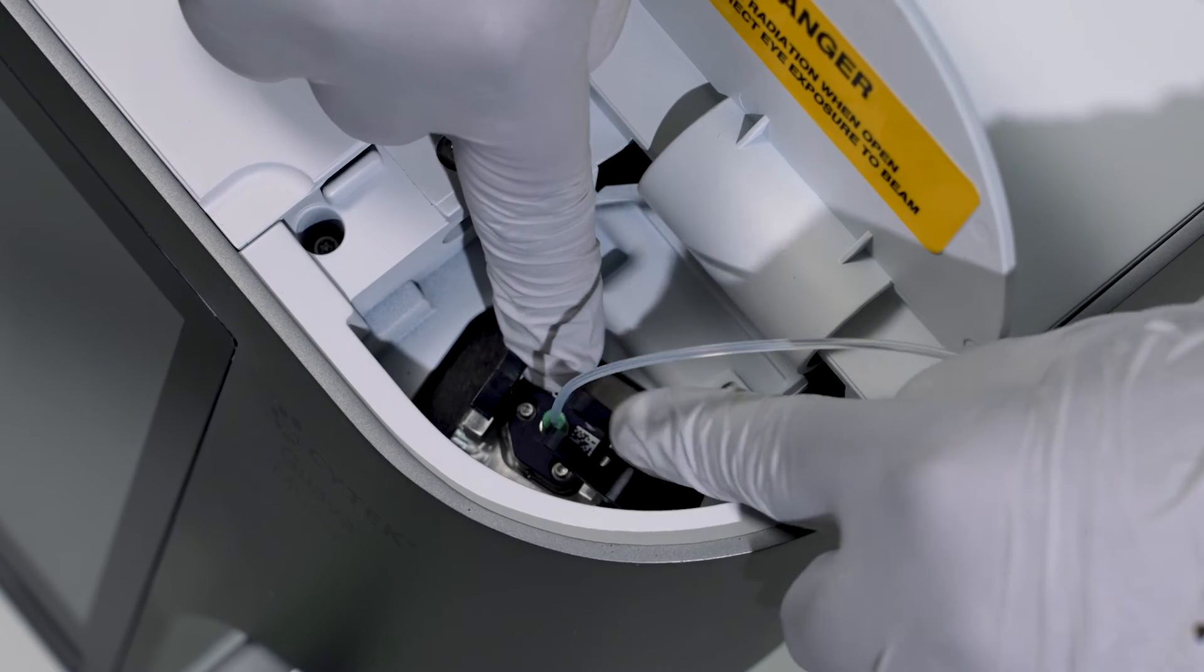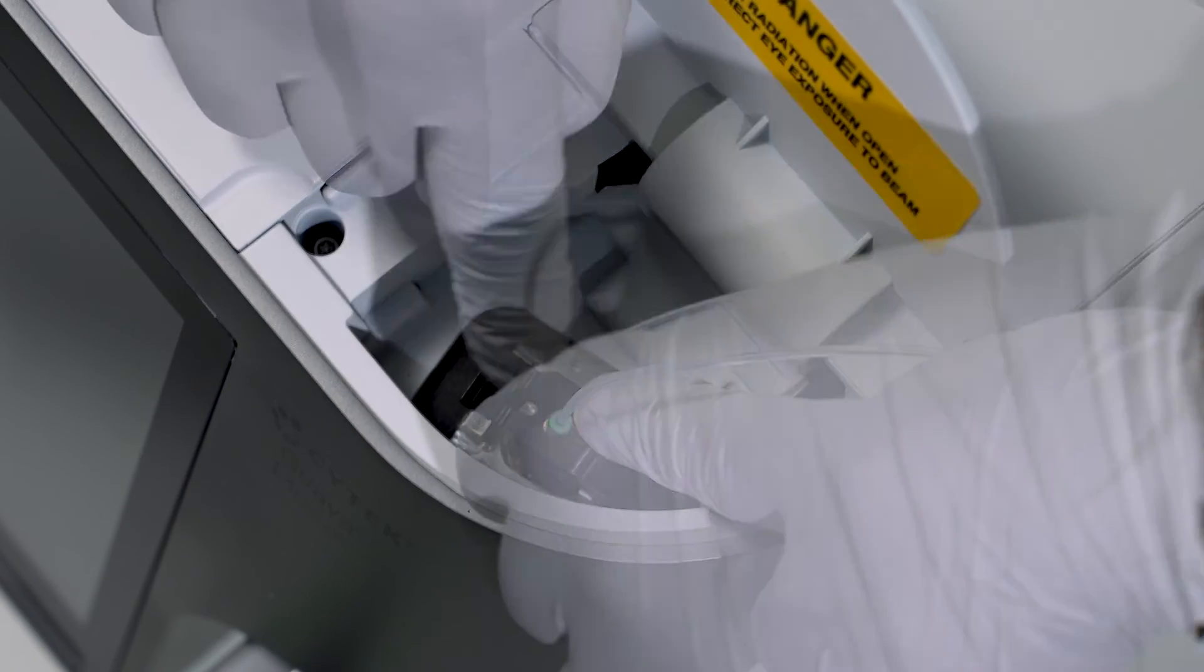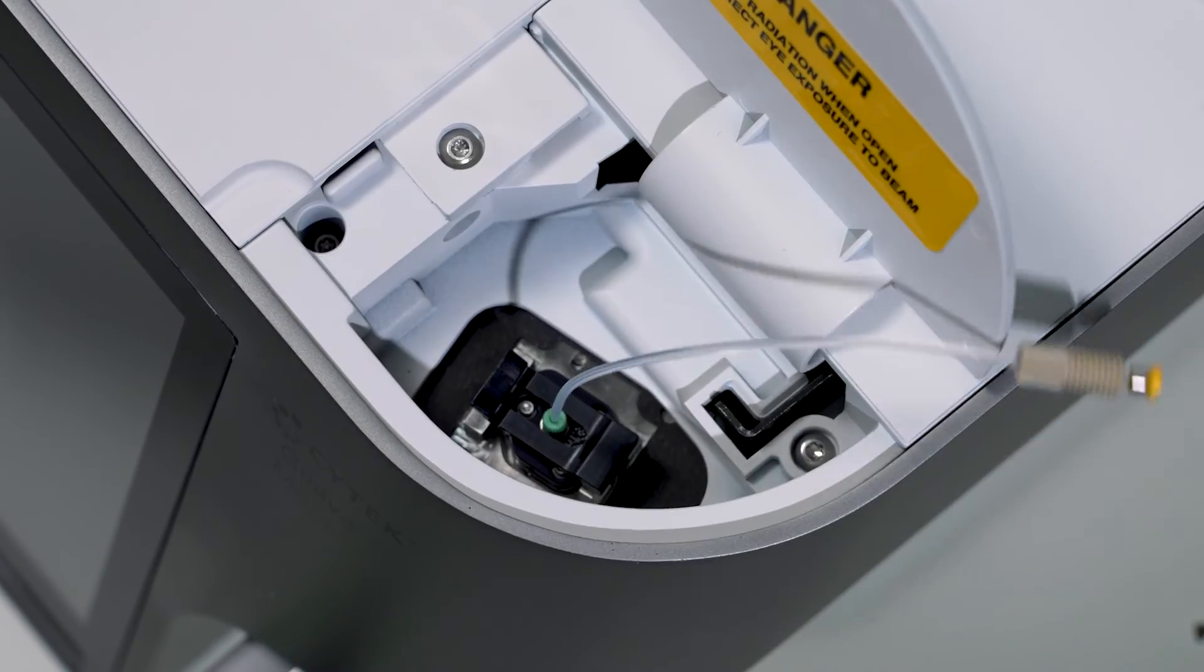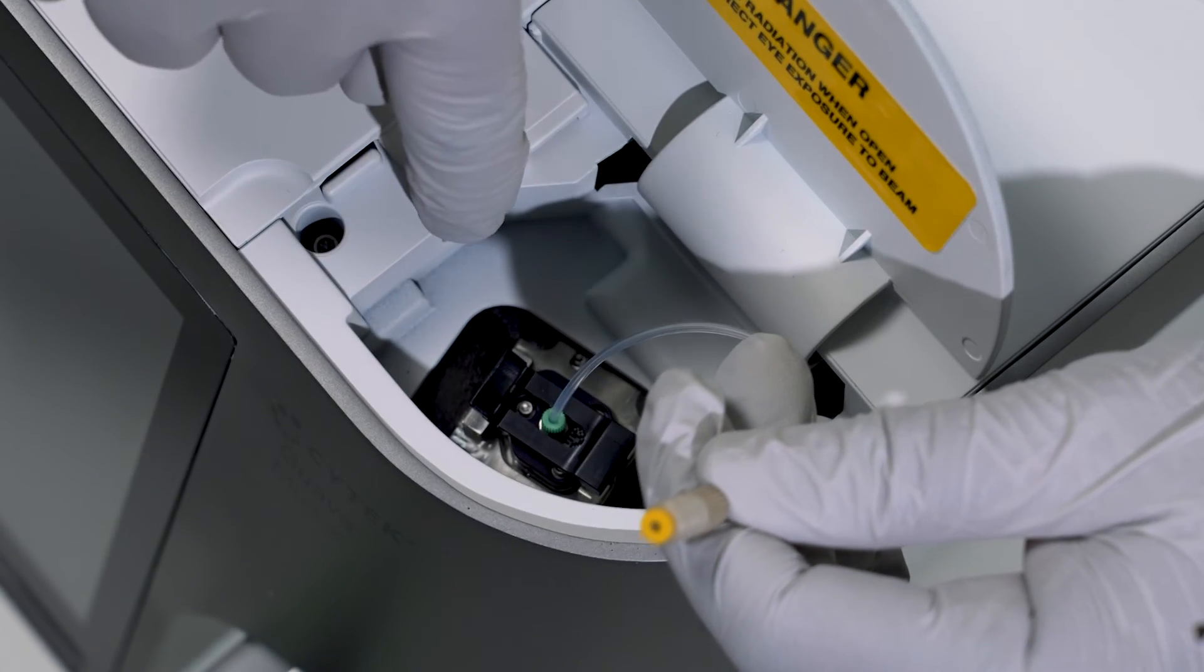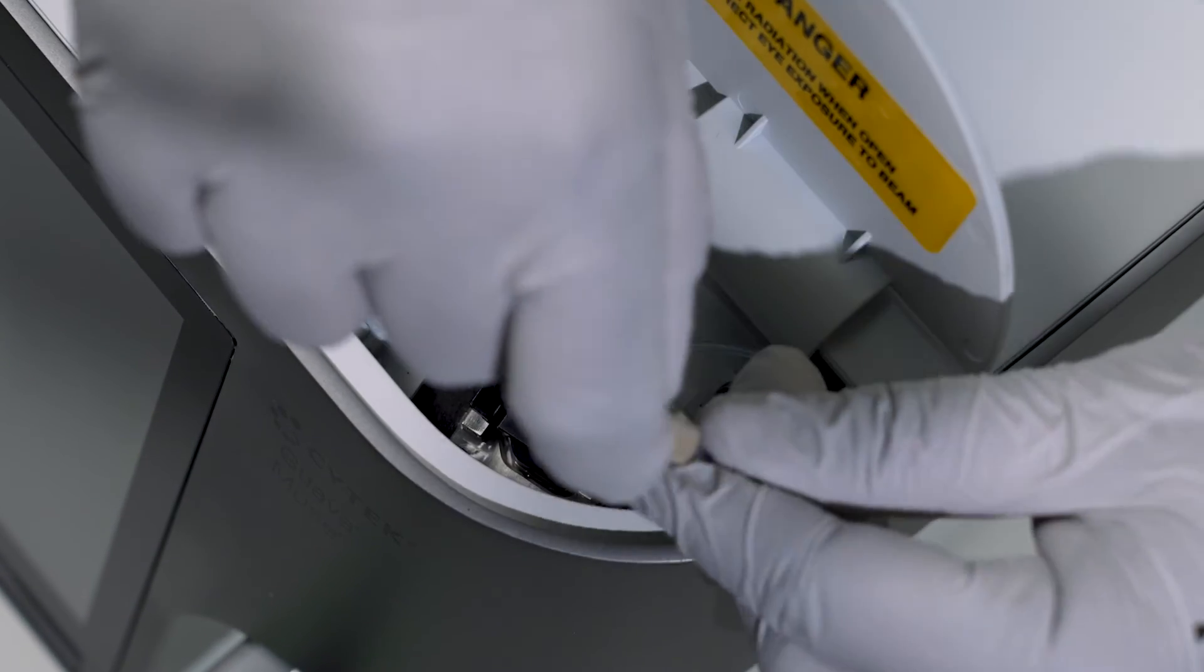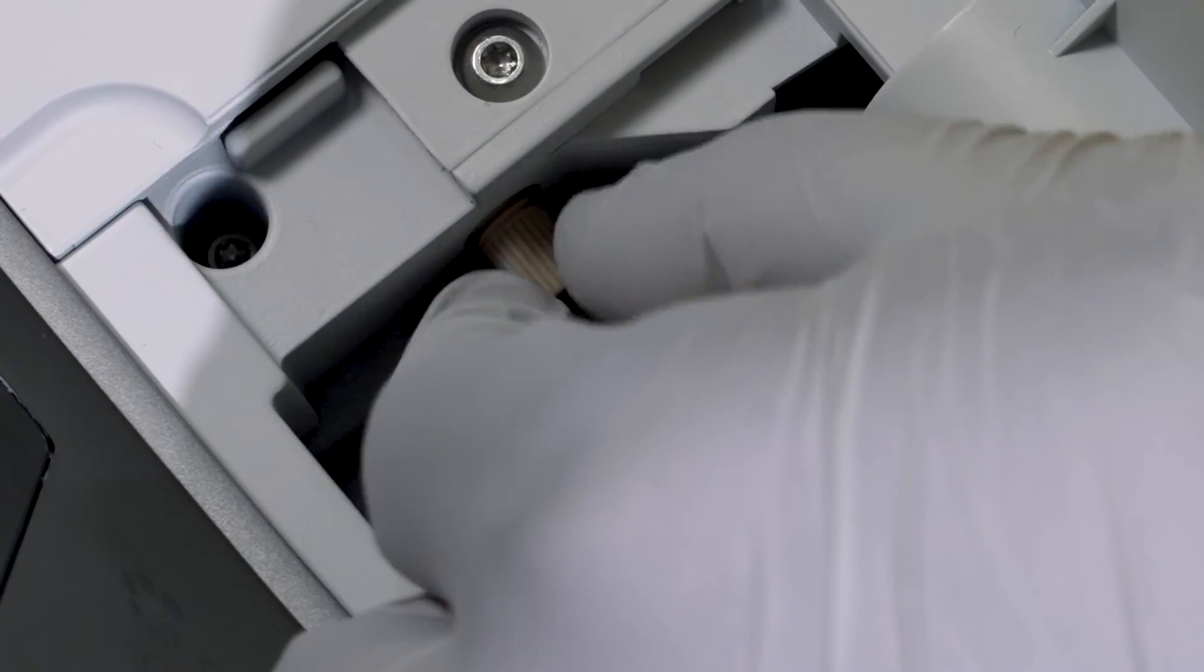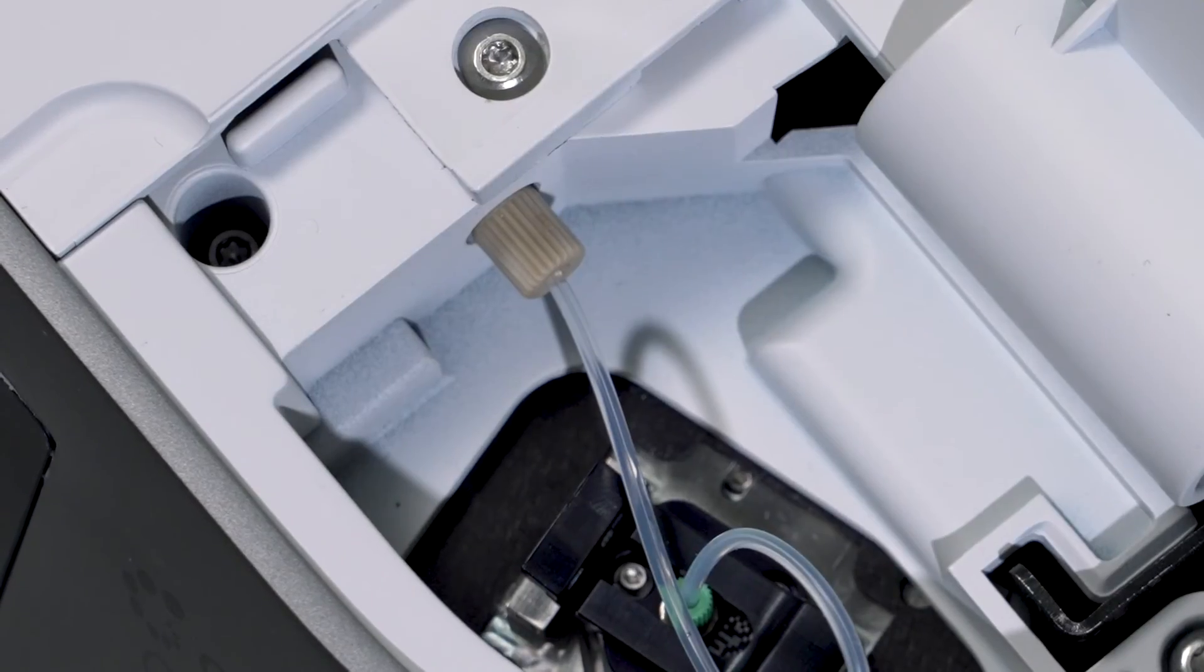When the flow cell is seated properly, close the clamp to secure the flow cell in place. Now connect the flow cell tubing to the fitting next to the flow cell chamber. Securely tighten with your fingers or use the tightening tool as necessary.